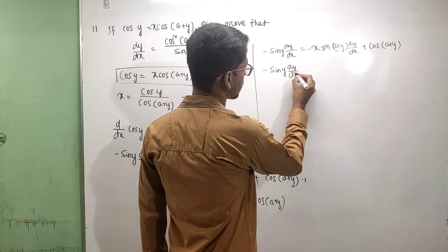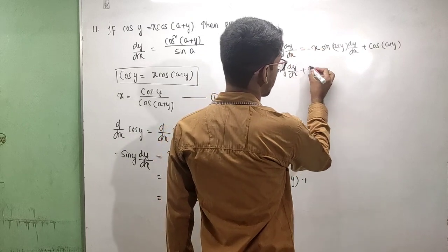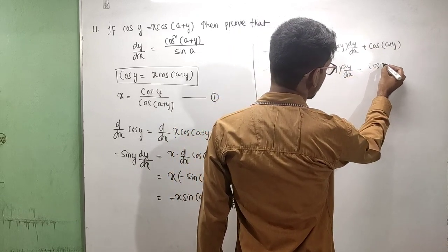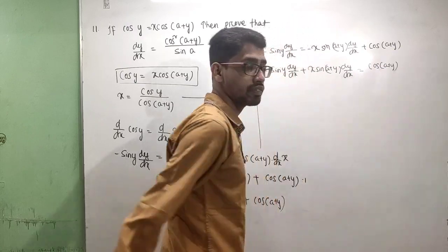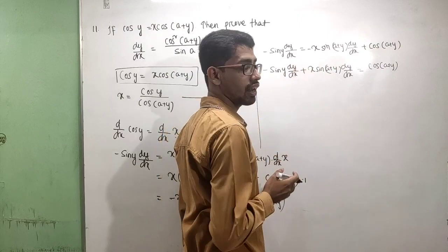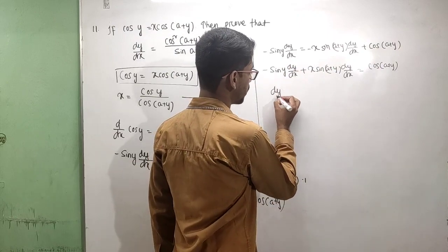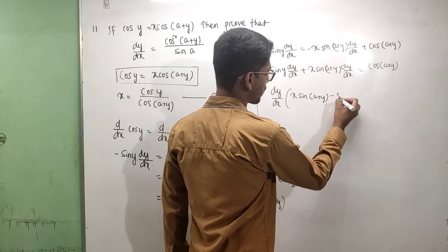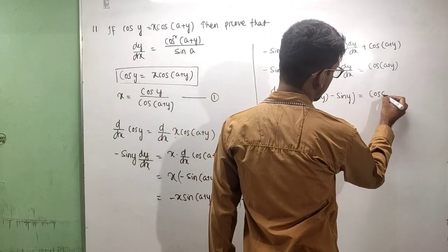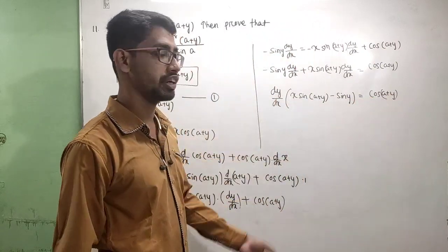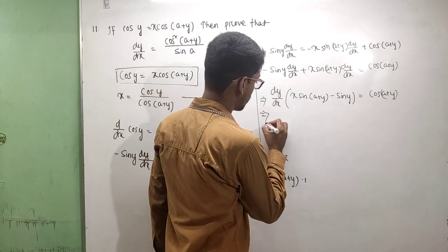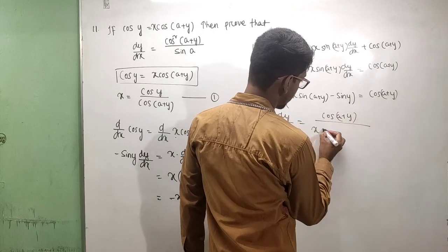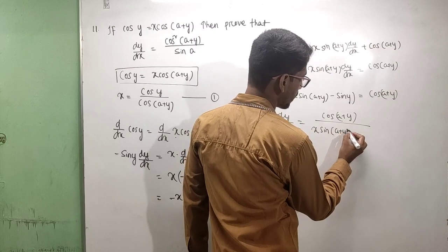Rearranging: cos(a + y) plus x·sin(a + y) · dy/dx equals cos(a + y). Collecting dy/dx terms on one side: dy/dx is equal to cos(a + y) divided by [x·sin(a + y) minus sin y].